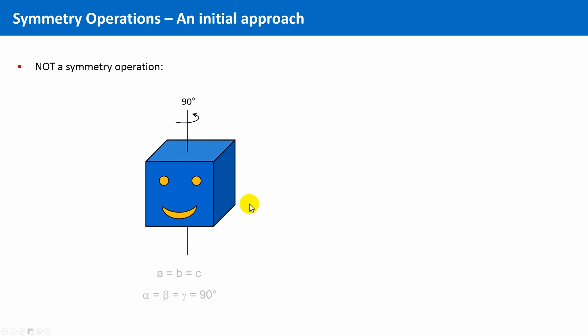Inversely, if we take this cube in which one face is decorated with this face, and if we rotate the cube along this axis by 90 degrees, then we end up with this configuration, and this is clearly not a symmetry operation.